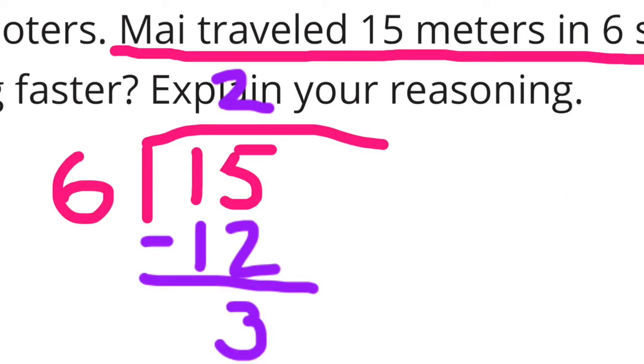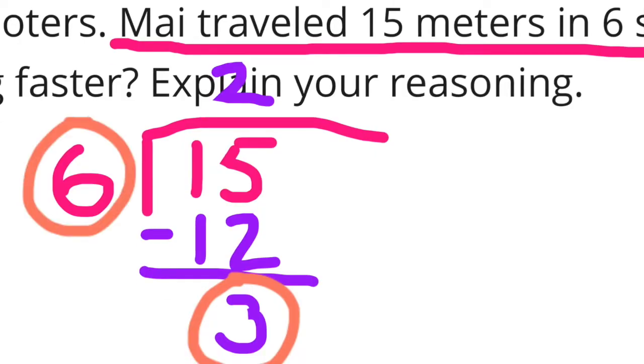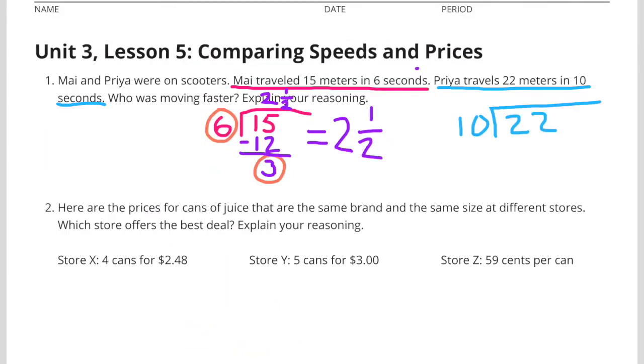15 divided by 6 is 2 with 3 left over, 6. 3 sixths is the same as 1 half. So Mai can travel 2 and a half meters in 1 second.